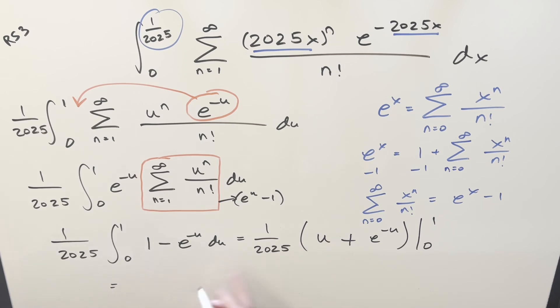So let's just evaluate it. Constant in front, one over 2025. Plug in a one first. We're going to have one plus e to the minus one. I'll write that as one over e. Then minus, plug in a zero, that's nothing. Plug in zero here, we just get a one. So we're going to have a minus one there. One minus one, zero. Distribute this, multiply this in. For my final solution of this, we just get one over 2025 e. And that's it.